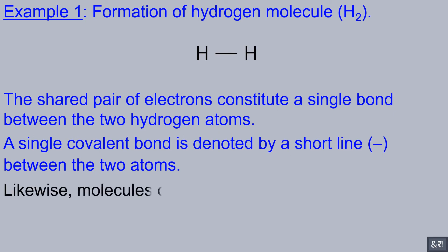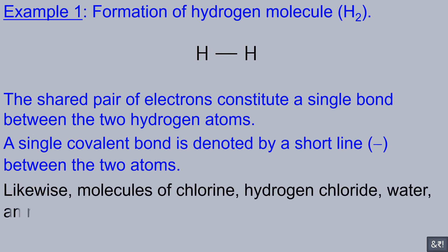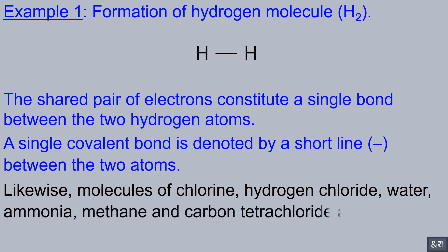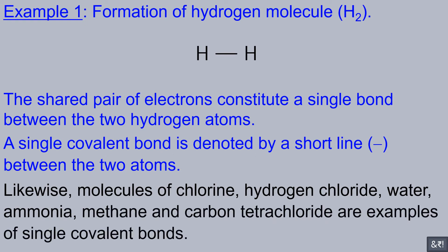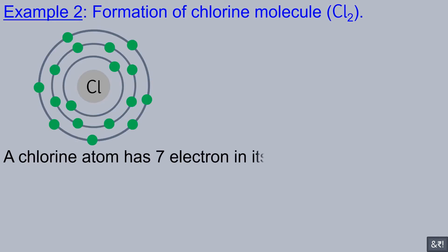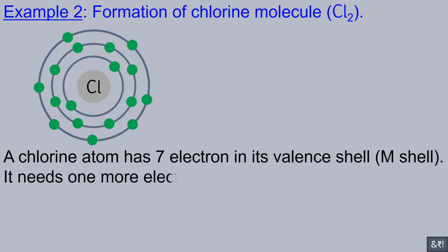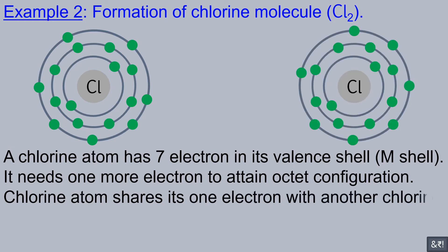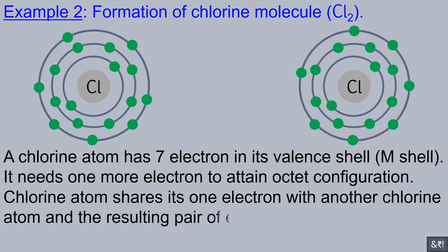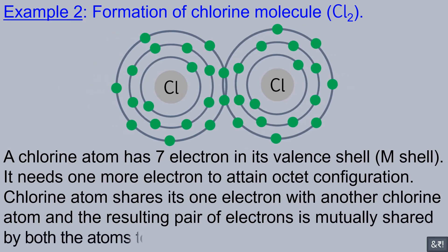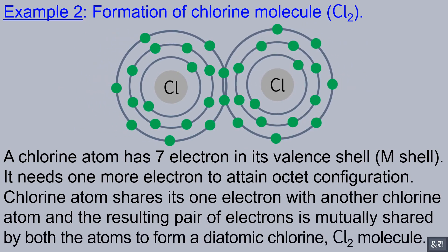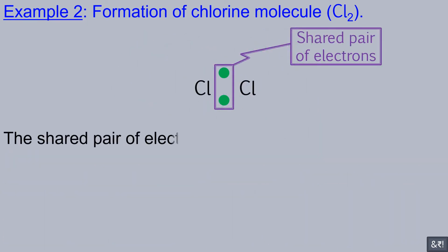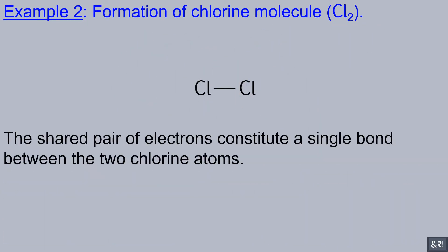Likewise, molecules of chlorine, hydrogen chloride, water, ammonia, methane, and carbon tetrachloride are examples of single covalent bonds. Example 2: Formation of chlorine molecule Cl2. A chlorine atom has seven electrons in its valence shell. It needs one more electron to attain octet configuration. Chlorine atom shares its one electron with another chlorine atom, and the resulting pair of electrons is mutually shared by both atoms to form a diatomic chlorine molecule. The shared pair of electrons constitutes a single bond between the two chlorine atoms.